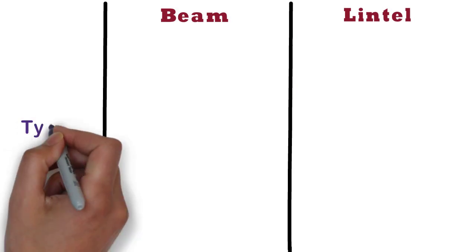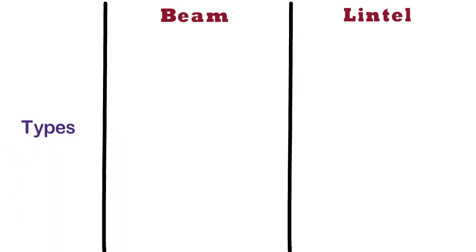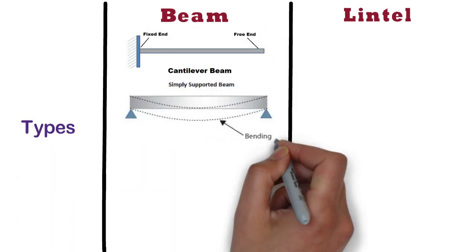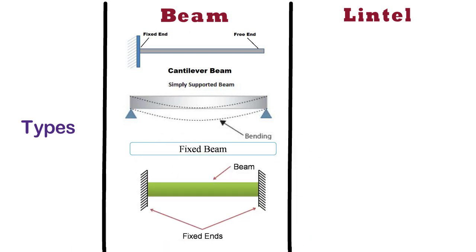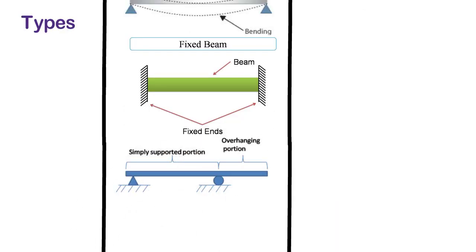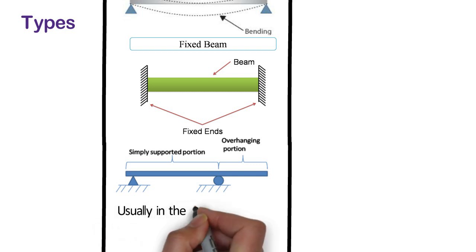Types. The different types of beams are cantilever beam, simply supported beam, fixed beam, overhanging beam, etc. They can be of different materials, but usually they are in the form of RCC.